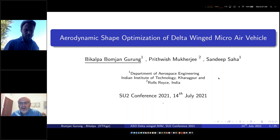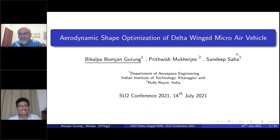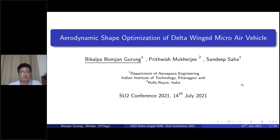The next talk is given by Bikalpa Gurung from the Indian Institute of Technology, Kharagpur, and also from World Race India. My name is Bikalpa Gurung and I'm a master's graduate from IIT Kharagpur. The topic of my presentation is aerodynamic shape optimization of delta wing micro air vehicles, and my research is more based upon the application of tools that are already available rather than any modification to the tools.